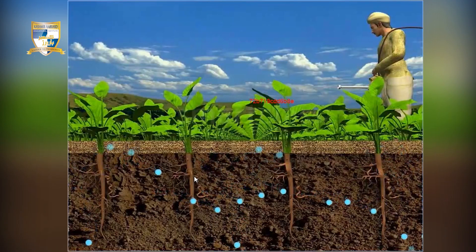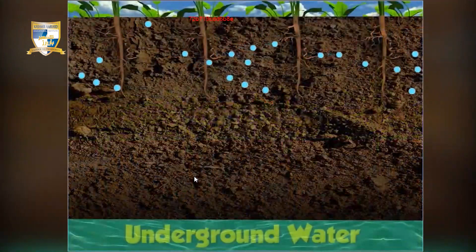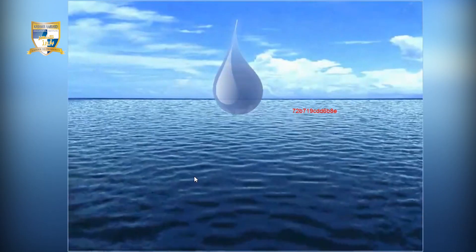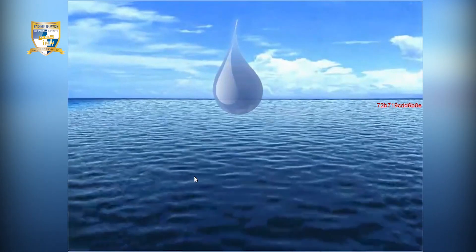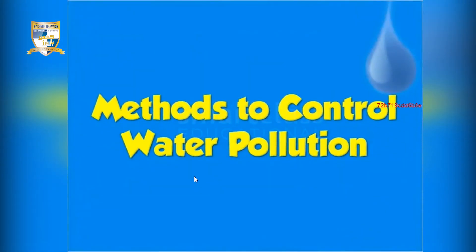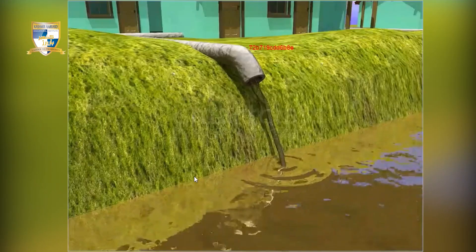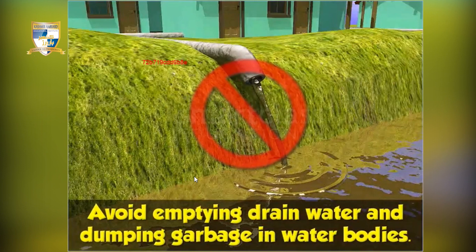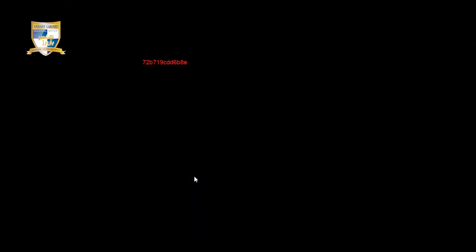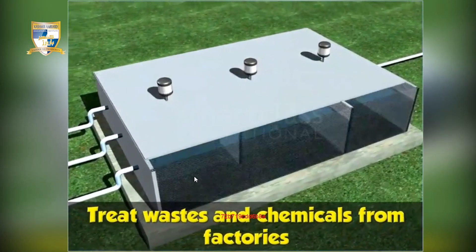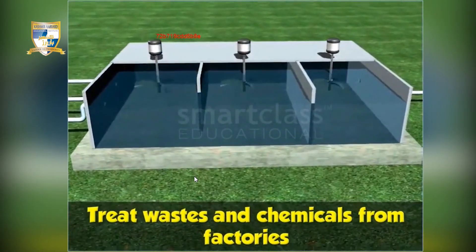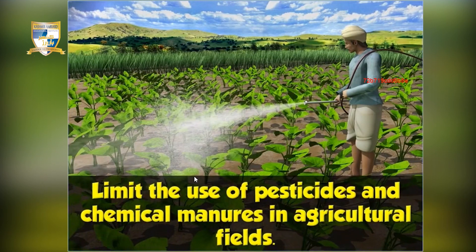Pesticides and chemical manures can also seep through the soil into underground water, thereby polluting it. Since water is a precious resource, we must prevent it from getting polluted. The most important method to control water pollution is to avoid emptying drain water and dumping garbage in water bodies. The second method is to properly treat wastes and chemicals from factories before releasing them into water bodies. The third method is to limit the use of pesticides and chemical manures in agricultural fields.